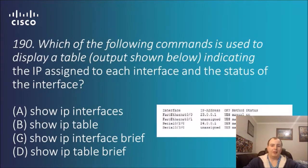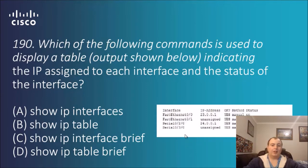Question 190: which of the following commands is used to display a table indicating the IP address assigned to each interface and the status of the interface? Options include: show IP interfaces, show IP tables, show IP interface brief, show IP table, table allow, and show IP table brief. The answer to this one is show IP interface brief.